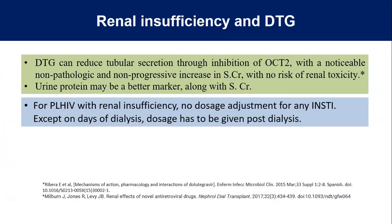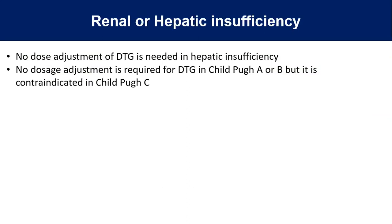DTG can produce reduced tubular secretion through inhibition of OCT2 (organic cation transporter 2), with a non-pathogenic and non-progressive increase in serum creatinine with no risk of renal toxicity. We should continue and monitor urine protein along with serum creatinine for PLHIV with renal insufficiency. No dose adjustment for dolutegravir is required except on dialysis days, when a second dose should be given after dialysis. Regarding hepatic insufficiency: no dose adjustment of DTG is needed except for Child-Pugh category C, where DTG should not be used. In Child-Pugh A and B, dolutegravir can be used without risk.